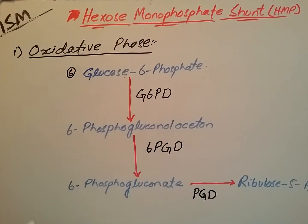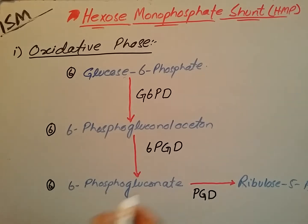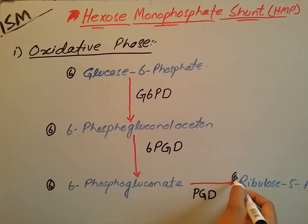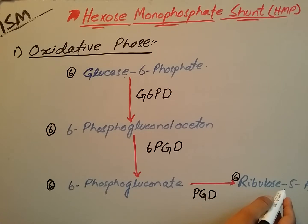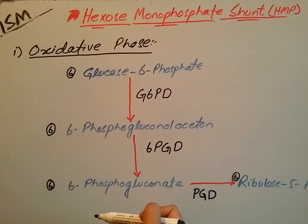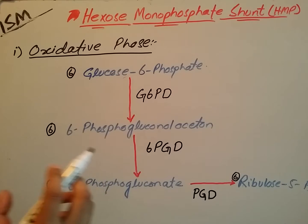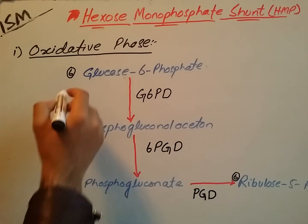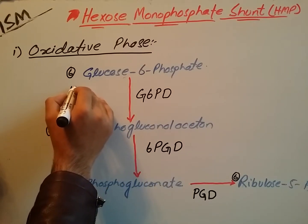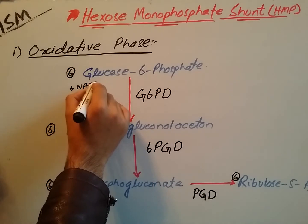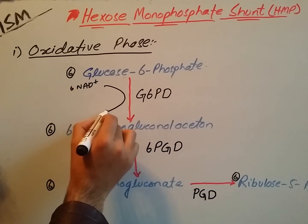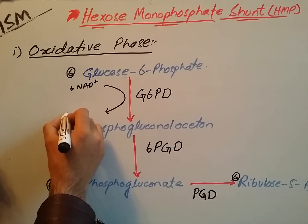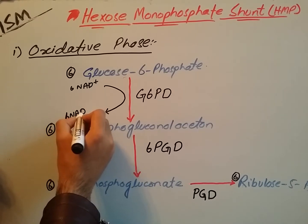Six molecules of glucose-6-phosphate are converted into six molecules of 6-phosphogluconolactone, which convert into six molecules of 6-phosphogluconate, and then into six molecules of ribulose-5-phosphate. These are six-carbon compounds converting to a five-carbon compound. Here, six molecules of NADP+ are converted into six molecules of NADPH.